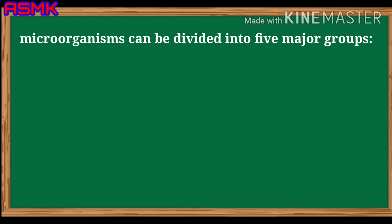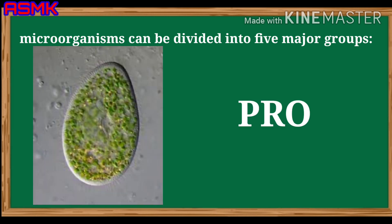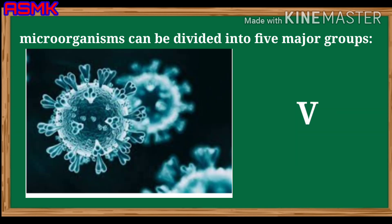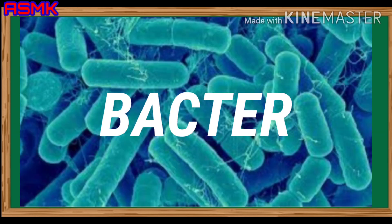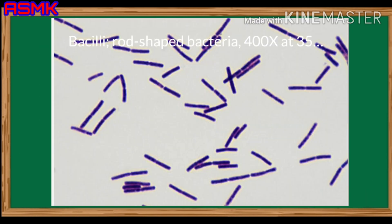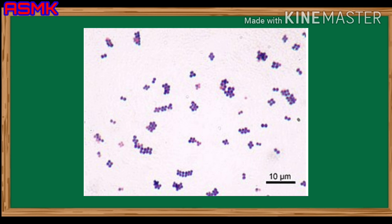They are bacteria, protozoa, fungi, algae, and viruses. Bacteria are unicellular organisms. Different bacteria have different shapes: rod-shaped bacilli, spherical cocci, comma-shaped vibrio, and spiral-shaped spirilla.